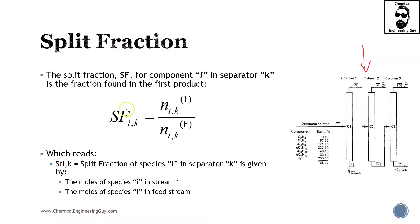The split fraction SF for component i in separator k is the fraction found in the product, and is shown as follows: SF_{i,k} equals the total amount of moles of i in k, divided by the total amount of moles of i in the feed stream.